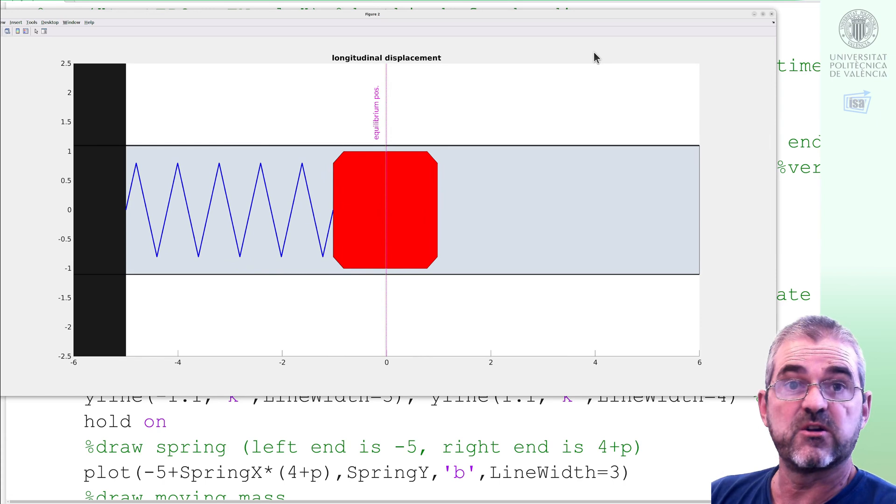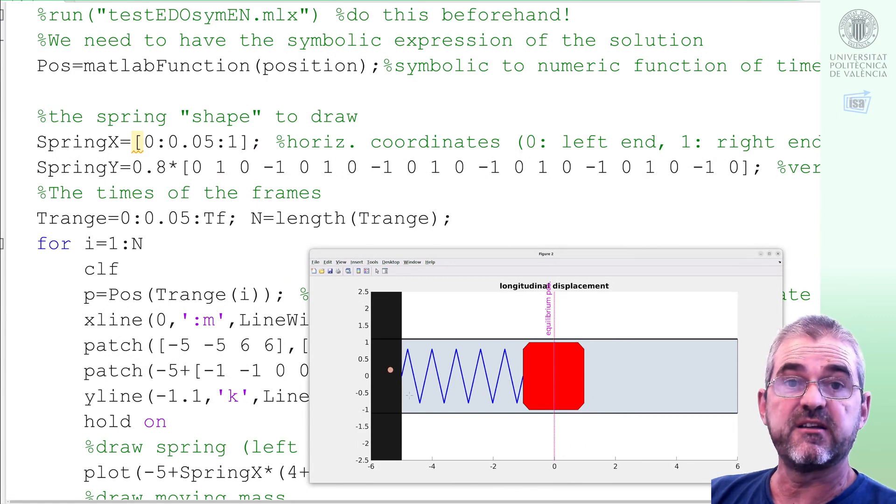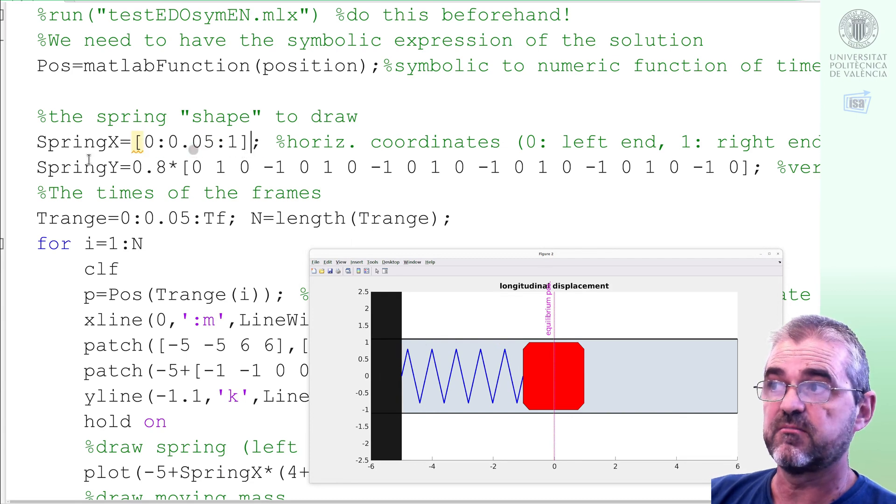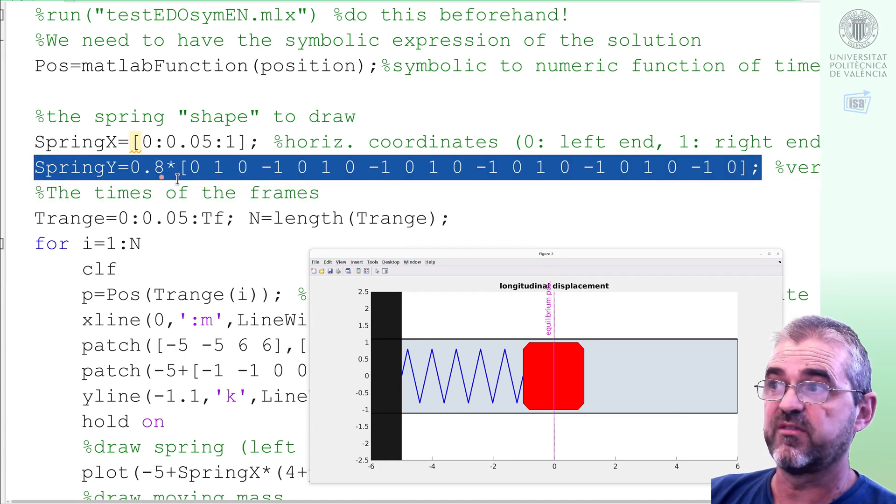So let's go! This animation code starts by defining the spring shape in here. Here we have a set of equally spaced points in the horizontal coordinate and this is the vertical coordinate of the spring points. So I multiply, I mean center up, center down, center up, center down by 0.8.